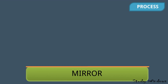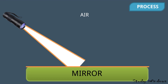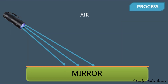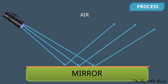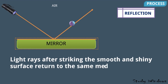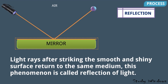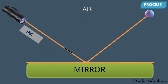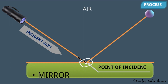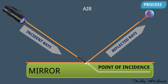All around the mirror it is a medium, and we have seen the ball bouncing back. Light bounces back on the mirror and returns to the same medium, like air. After striking the smooth and shiny surface, light rays return to the same medium, and this phenomenon is called reflection of light. The light falling on the mirror is known as the incident ray, the point where light falls is the point of incidence, and the reflected light is the reflected ray.